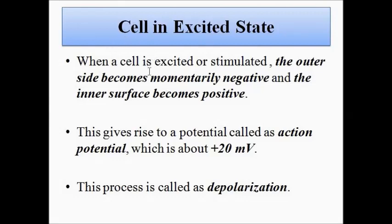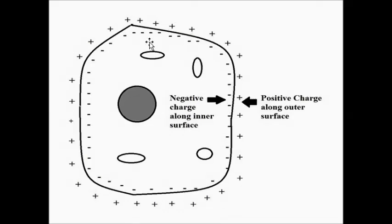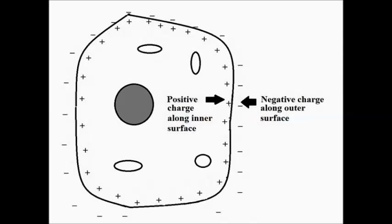When the cells associated with a particular body part get excited or stimulated because of any physical activity, the outer side of the cell becomes momentarily negative and the inner side of the cell membrane becomes positive — just the opposite of the resting state. The inner side acquires a positive charge and the outer side acquires a negative charge. In the resting state there is negative charge along the inner side and positive charge along the outer side; in the excited state it is exactly the opposite.